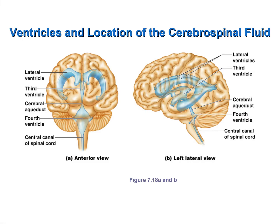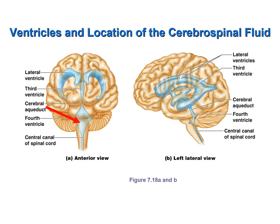This figure shows the ventricles of the brain and the central canal of the spinal cord. The lateral ventricles, also called lateral horns because they look like a ram's horns, are found in the cerebrum. They contain a choroid plexus — a knot of blood vessels and ependymal cells that make cerebrospinal fluid from the blood. Cerebrospinal fluid then passes from the lateral ventricles into the third ventricle, which also has its own choroid plexus. It then passes through the cerebral aqueduct into the fourth ventricle, which also has its own choroid plexus. From there, some cerebrospinal fluid passes into the central canal of the spinal cord.